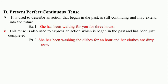Now we come to present perfect continuous tense. Present perfect continuous tense is used to describe an action that began in the past, is still continuing, and may extend into the future. For example: 'She has been waiting for you for 3 hours' — the action of waiting began in the past and is still continuing. It is also used to express an action which began in the past and has been just completed, such as the action of washing the dishes, whose result is visible in the present.